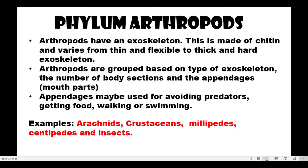Next, Phylum Arthropoda. Arthropods have an exoskeleton made up of chitin, ranging from thin and flexible to thick and hard. Arthropods are grouped based on the type of exoskeleton, the number of body sections, and their appendages or mouthparts. Appendages may be used for avoiding predators, getting food, walking, or swimming. Examples include arachnids, crustaceans, millipedes, centipedes, and insects.